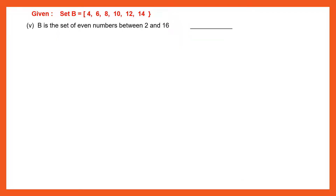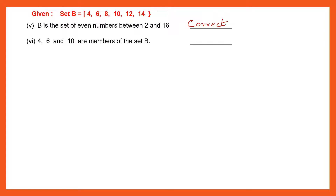Question 5: B is a set of even numbers between 2 and 16. The even numbers between 2 and 16 are 4, 6, 8, 10, 12 and 14. Set B has all those elements, so this statement is correct. Question 6: 4, 6 and 10 are members of set B. Yes, 4, 6 and 10 are there. So that statement is also correct.